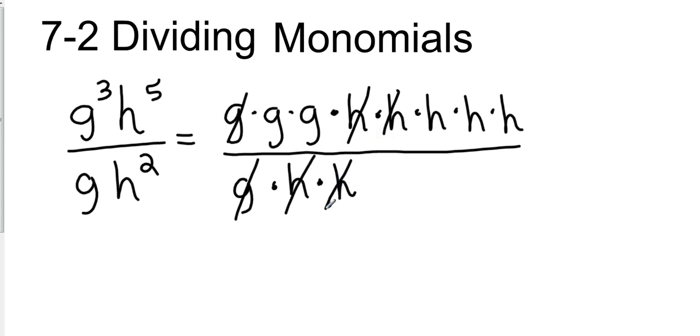So what I have at this point is I have two g's, which is g squared on top. Then I have three h's, which is h cubed. And then on the bottom, everything is canceled out, so that's just 1. So I could put that over 1, but I'm just going to leave it g squared, h to the 3rd.